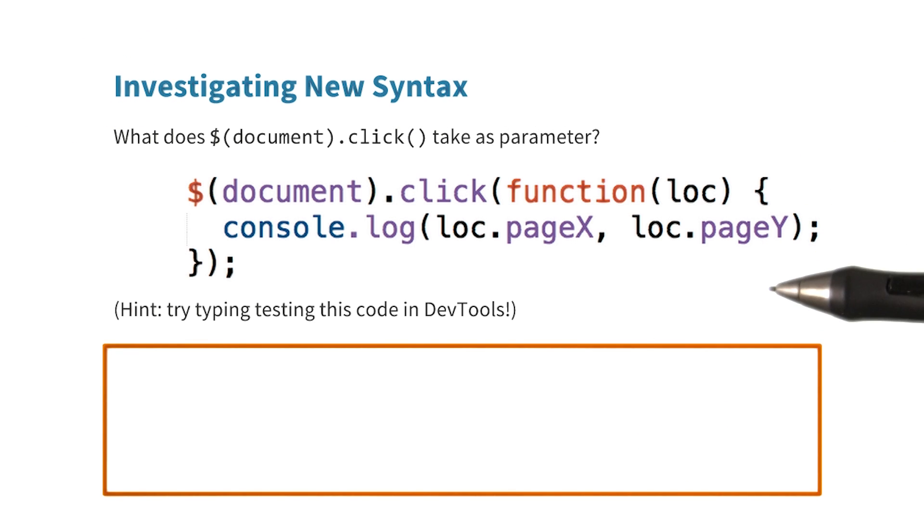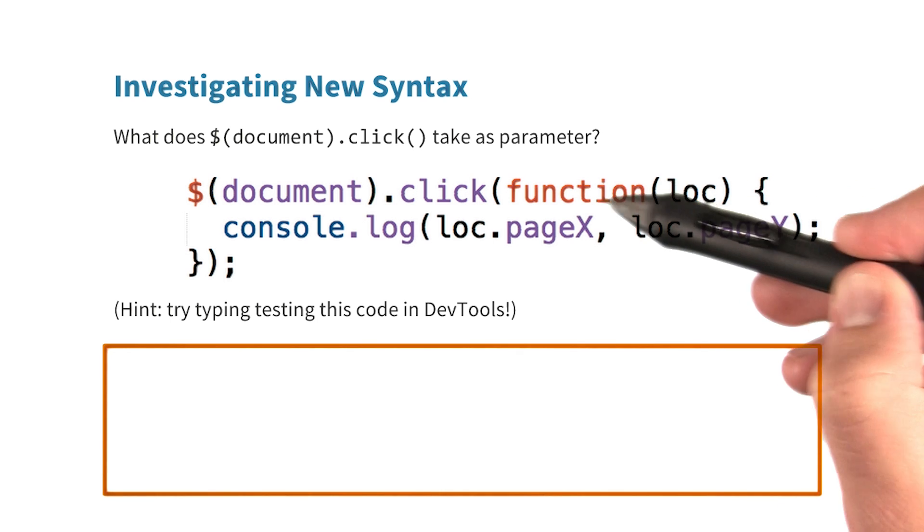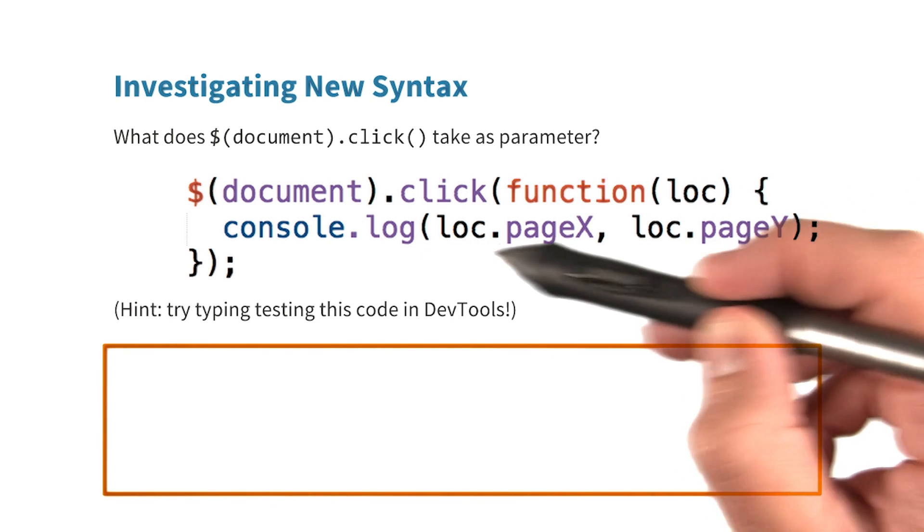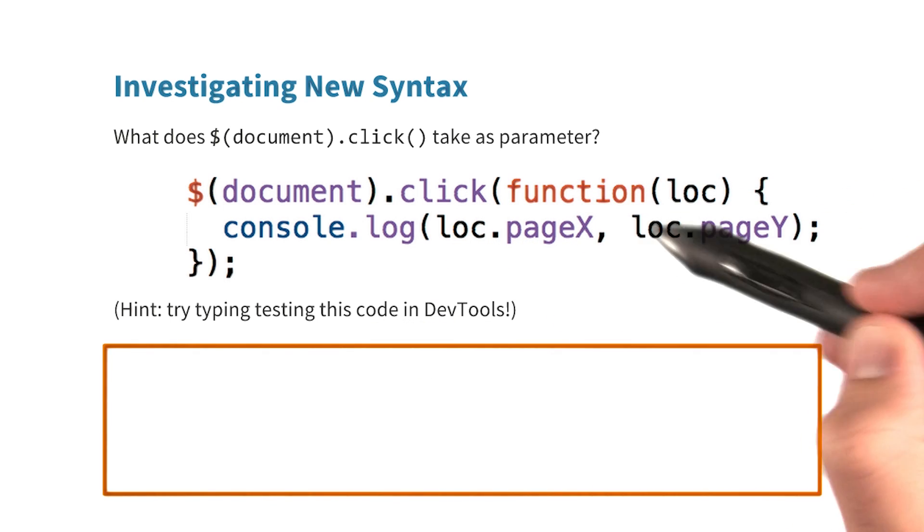This piece of code should look familiar. You saw something similar a few exercises ago when you were tracking click locations on a website. There's this weird syntax here with function, location, console.log, etc. What is going on here?